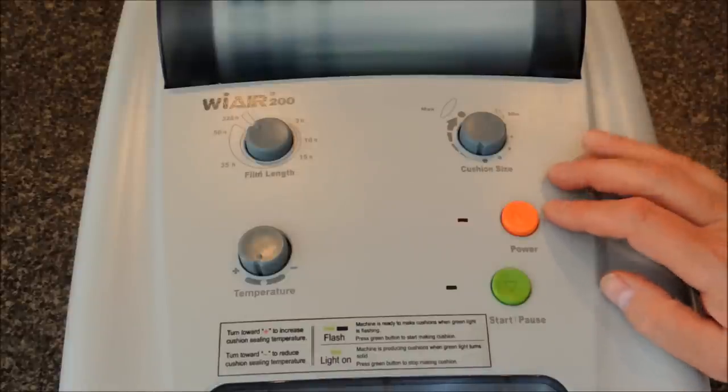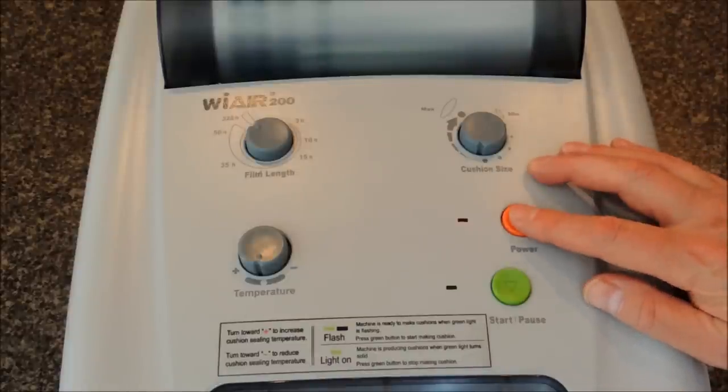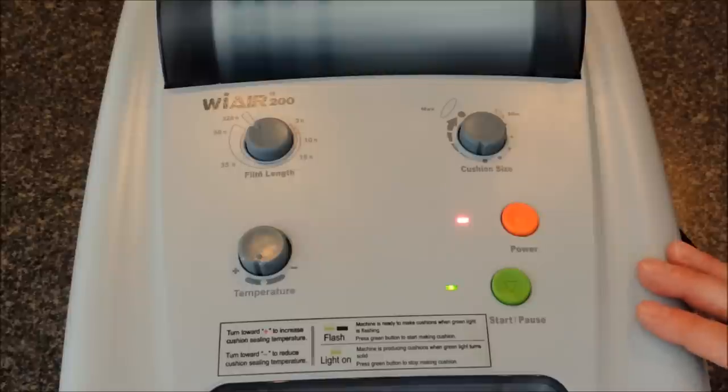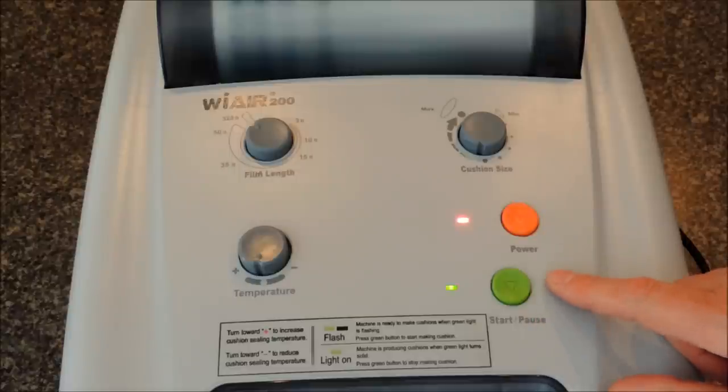To start the Wier, all you need to do is push the orange button. It then sends the machine into startup mode. You'll see a green light. When the green light starts flashing, it's warming up. When it turns solid, the machine is ready for use.